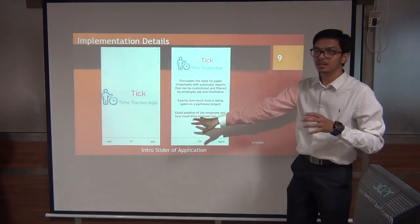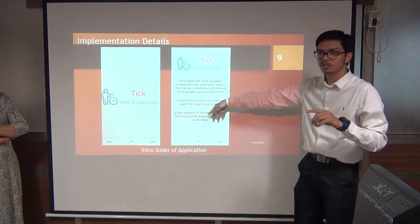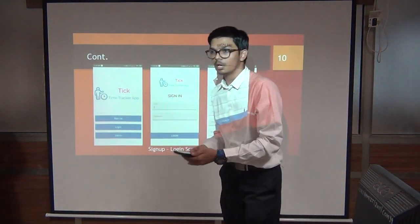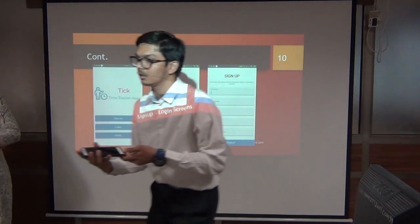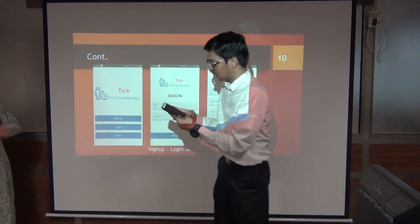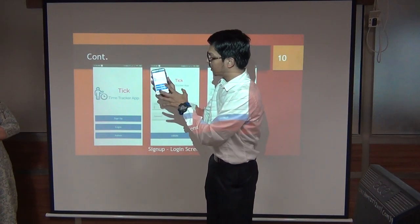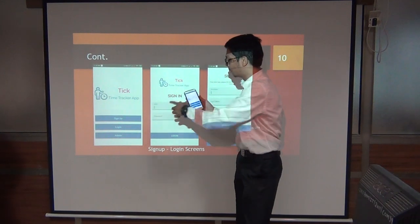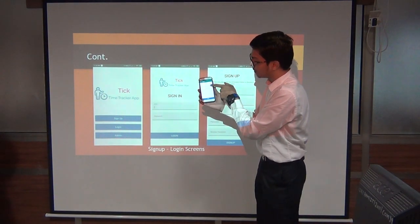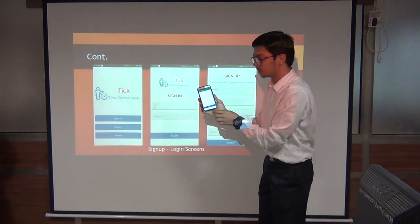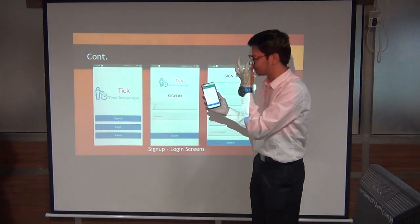This is the intro slider which is shown only one time to the user as an introduction to the application. Now I will show you the application. This is the TIG application — this is the first main activity. On sign up, the user will have to give some information: first name, last name, email, and password. The UI used is Material IO.